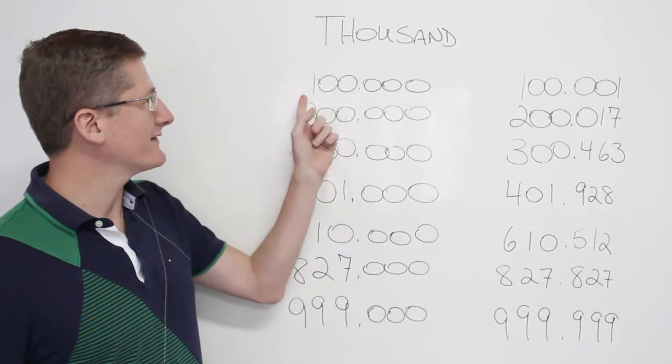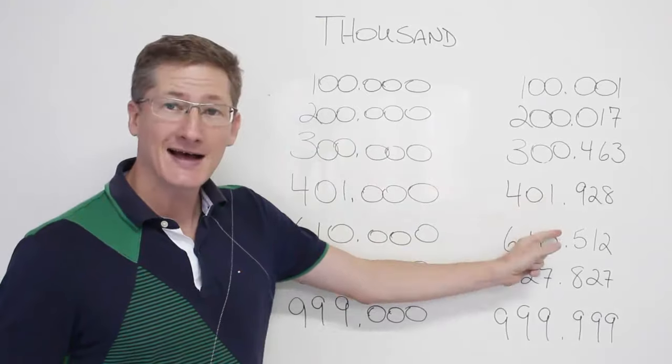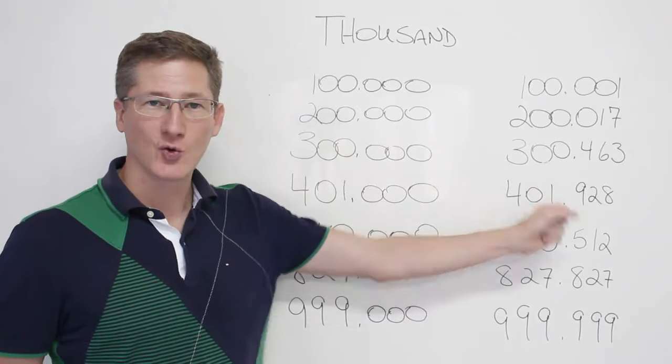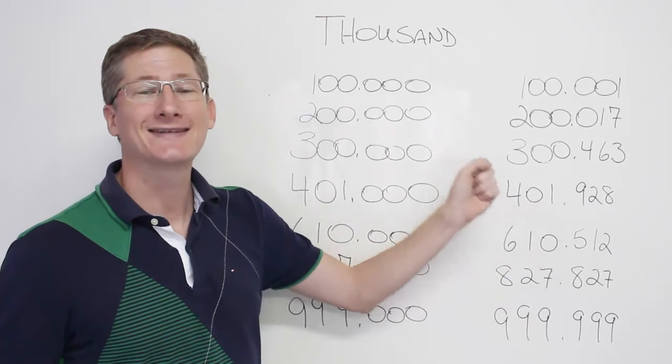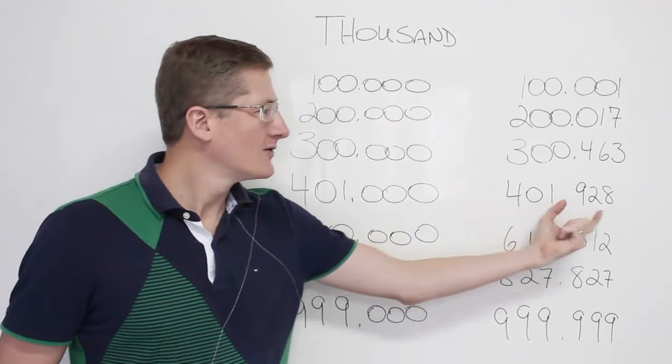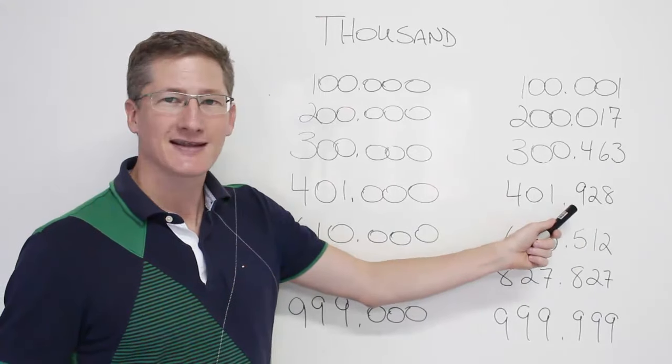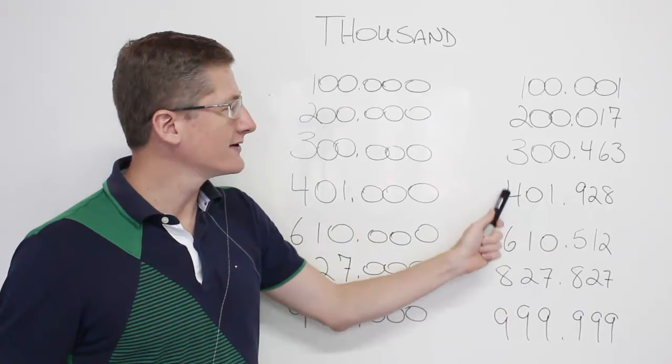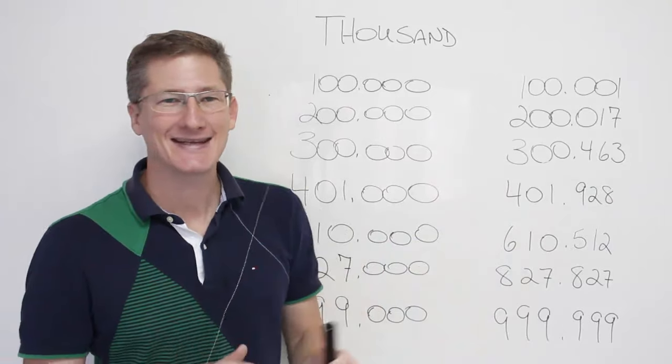They're not hard, for example we have numbers like 100,000 and 401,928. So all you have to remember is that where the comma is, that's where you're going to say thousand. We have 401 here, we have 928 here, so you just insert the thousand here. 401,928, that's it, it's easy.